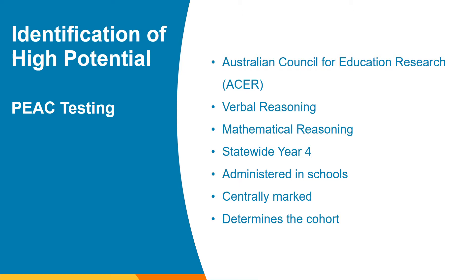In terms of identifying students for our program, Western Australia has a unique, systematic process for identifying students with high potential in the form of the PEAC testing. The current PEAC test, introduced in 2016, was devised by the Australian Council for Education Research. It consists of two tests and is administered to year four students in all primary schools across the state. The test is centrally marked and the cohort is determined by the results. In 2021, over 20,000 students were tested statewide, with around 8,500 of them being from the North Metro region. As a result of this process, 438 Year 4 students have been invited to attend the program beginning in 2022, representing around the top 3% of students tested.